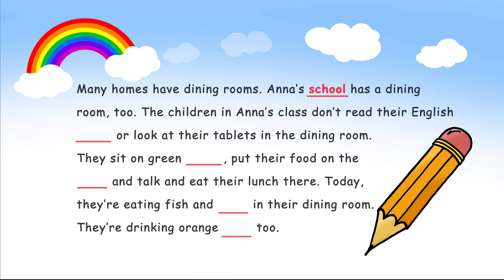The game continues until one team has named three objects in a row. You can play that game as many times as you like, and when you think your students are ready, they complete the text in Reading and Writing Part 4. Remind your students that there are eight pictures but only five gaps.